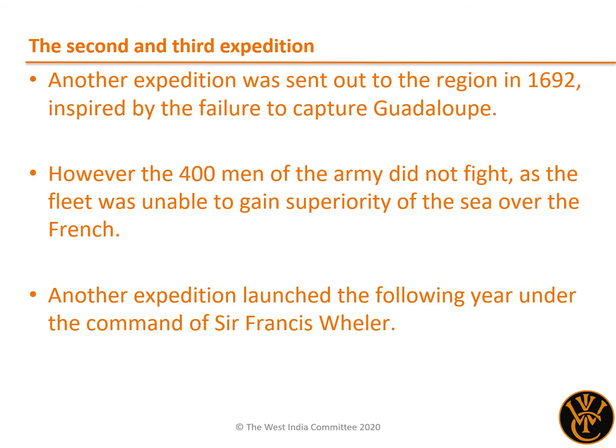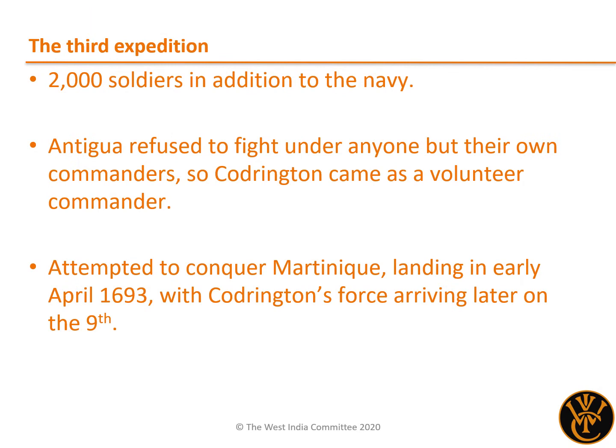Yet another expedition was thus launched the following year, under the command of Sir Francis Wheeler. This new force contained nearly 2,000 soldiers in addition to the navy. Militia had also been again raised in the West Indies, with Barbados providing an extra 1,000 men, but the Antiguan militia refused to fight under anyone but their own commander, and thus Christopher Codrington was obliged to join the expedition as a volunteer commander. The initial target for this expedition was the island of Martinique, with troops from England landing at the beginning of April 1693 and beginning a series of raids.